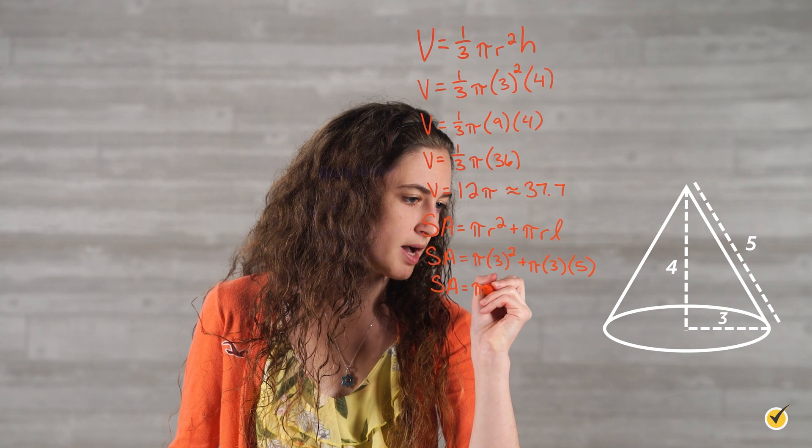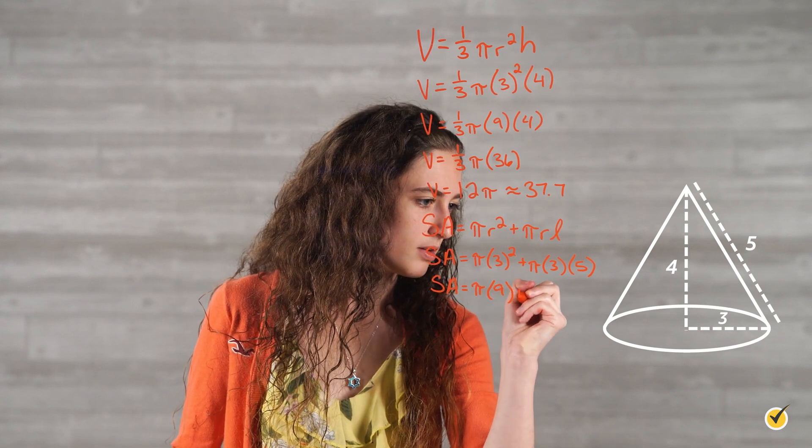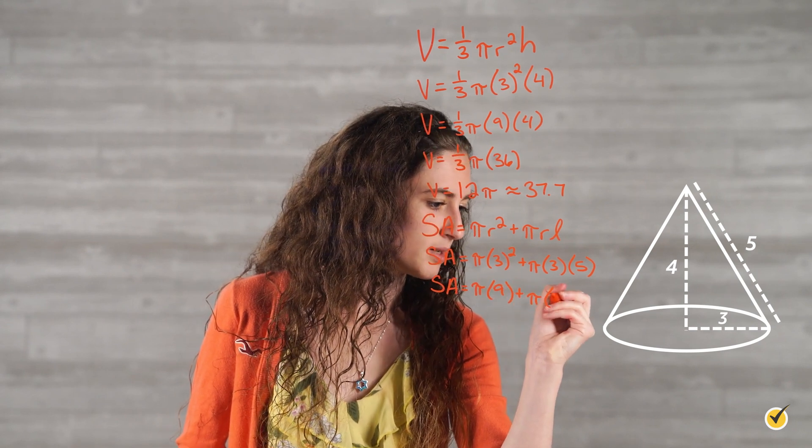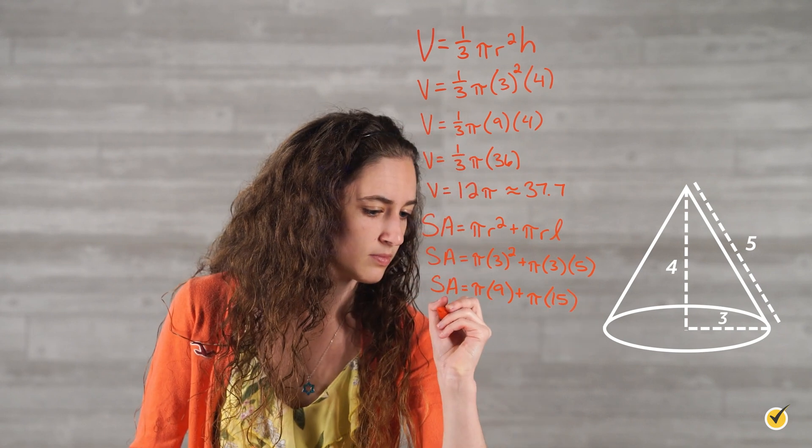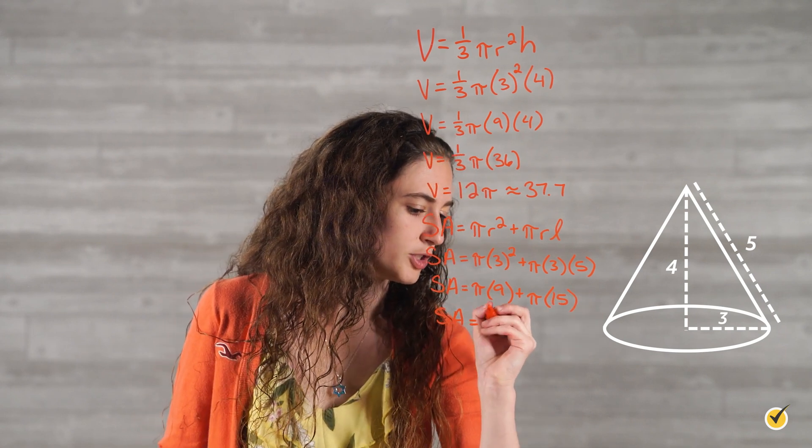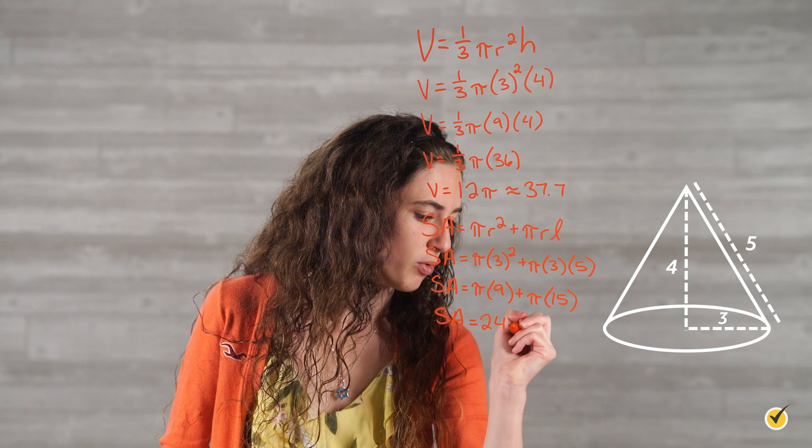Surface area is equal to pi times 9 plus pi times 15, which is equal to 24 pi.